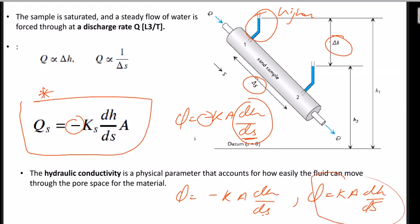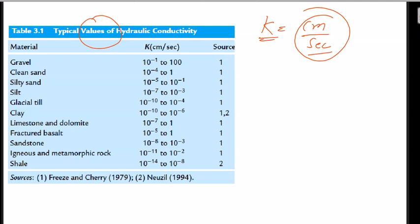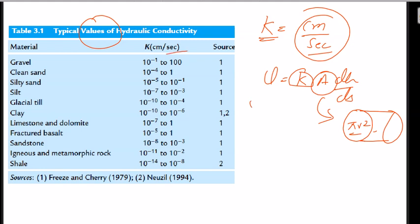So Q equals K times A times dH/dS is Darcy's equation. Q is the discharge rate — volume of water passing through the sample per unit time. The units of hydraulic conductivity K are centimeter per second, A is the cross-sectional area (pi r squared for a tube), and Q is the discharge rate in volume per time, such as meter cubed per second or centimeter cubed per second.